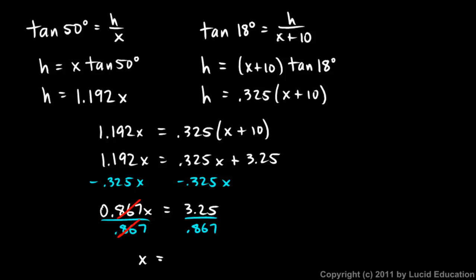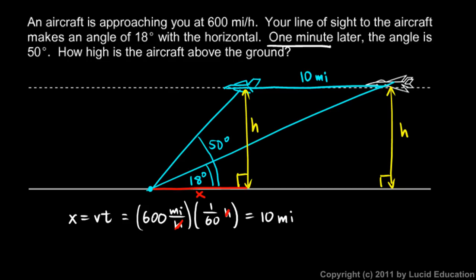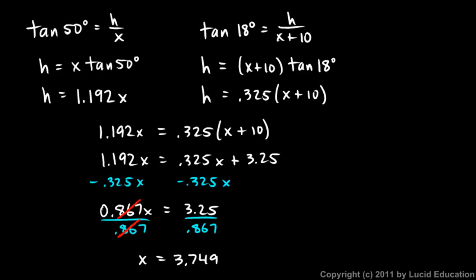Now remember I was trying to find h, I was trying to find this height. So back here I can use any of these equations, I could use this or this, and this one looks pretty easy so I'll use that. I'll say h is equal to 1.192x, and that comes out to 4.467 miles. So that plane is up pretty high.